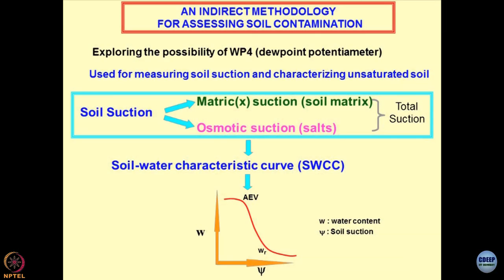Air entry value is the point beyond which moisture will drop but air will not enter — also known as the bubbling point. This is the point beyond which moisture loss is taking place but you are stopping air from entering, keeping the system from becoming unsaturated, though water continues draining. This is a sort of equilibrium existing at the interface of the contractile surface.